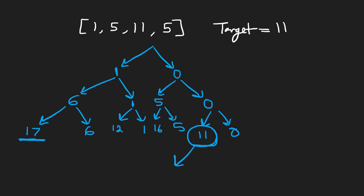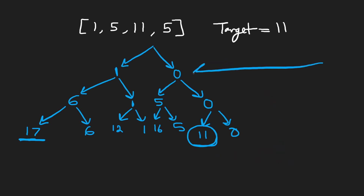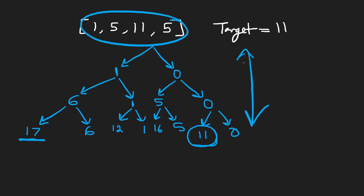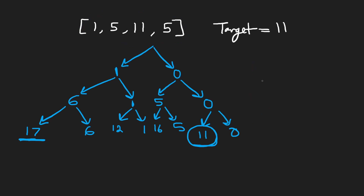We don't really have to continue anymore, so we can skip this last element — we found our target, we return true. As you can tell, since at every level of our decision tree we have two choices, and the height of this decision tree is N (the size of the input array), our time complexity is going to be O(2^N) for the brute force method.